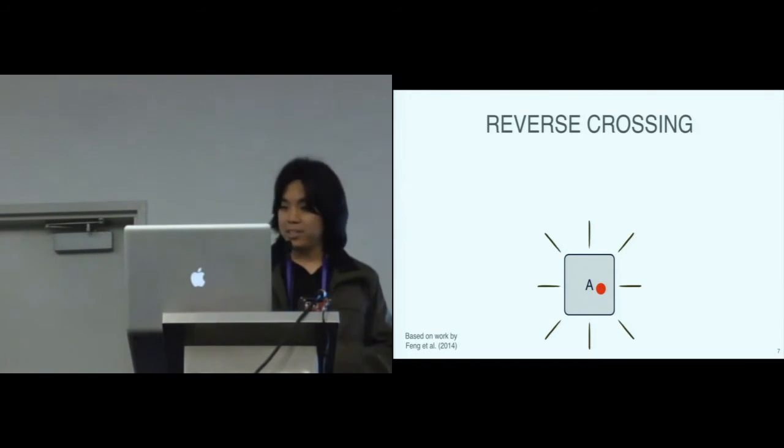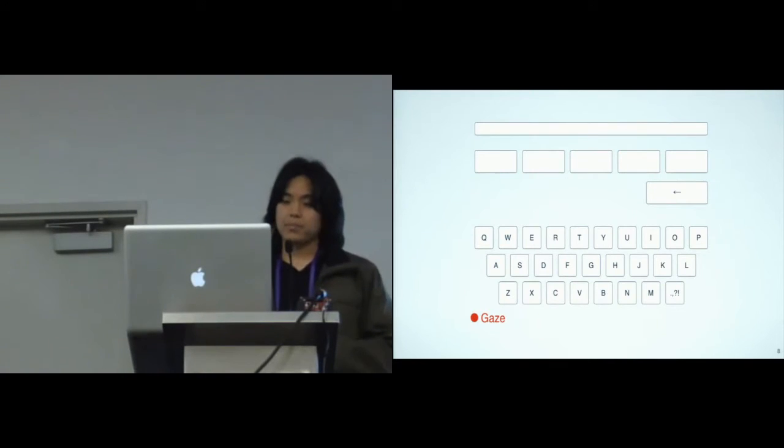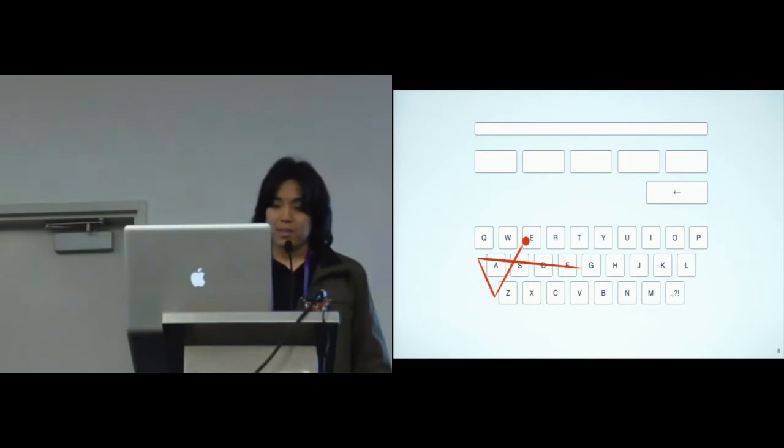Now, let's see an example of the user typing the word gaze with iSwipe. The user initially selects the first letter G by reverse crossing. Then, she glances through the vicinity of the middle letters A and Z. And as iSwipe uses the shape of the words, the user doesn't have to accurately reach the middle letters. Finally, she selects the last letter E by reverse crossing. And note that the word to be typed is shown in the action button, so the user doesn't have to move her gaze away from the keyboard to verify it. When the user finishes the reverse crossing, the word is typed.